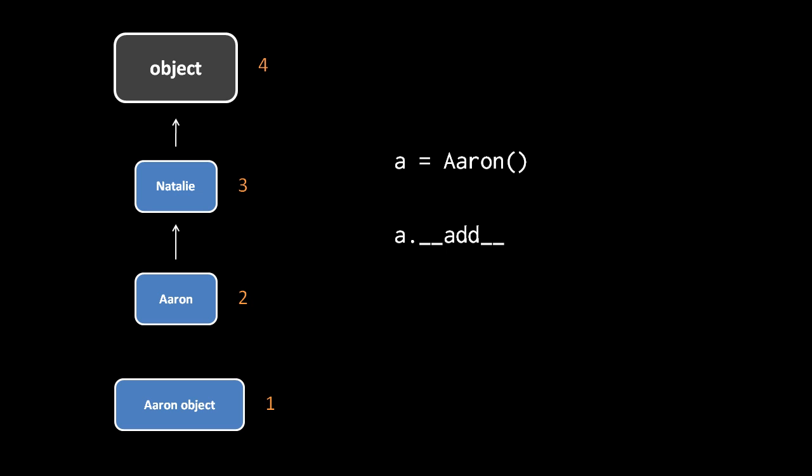For example, say again we have a class Aaron, and we have an instance of Aaron A. And then we do an attribute lookup for __add__. Well, because we're looking up the operator method explicitly by name, this is done like a regular attribute search.